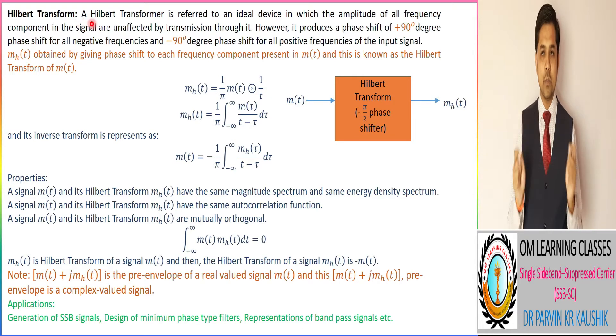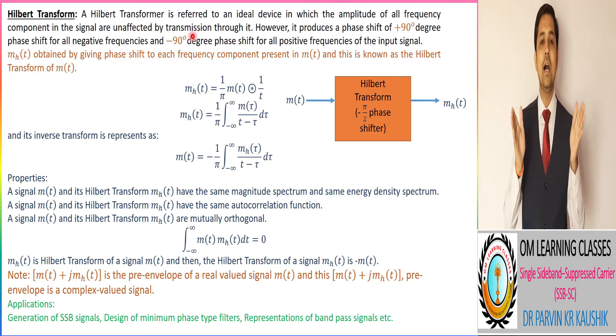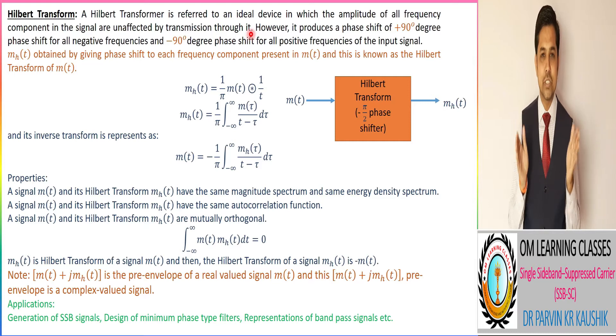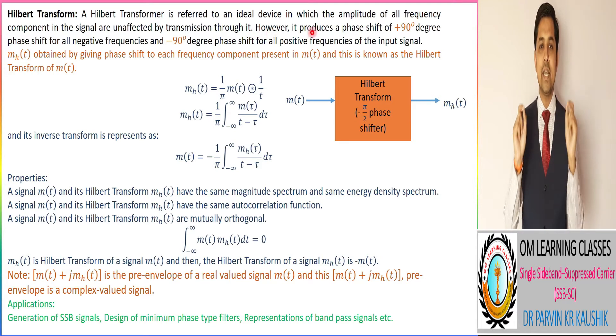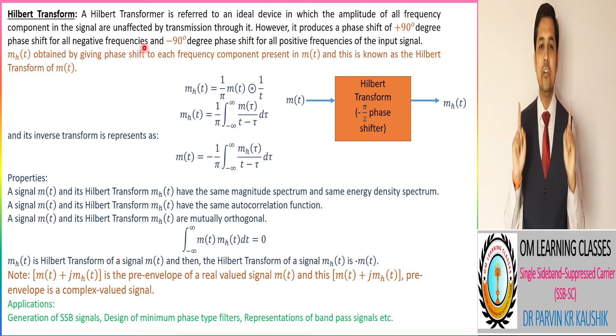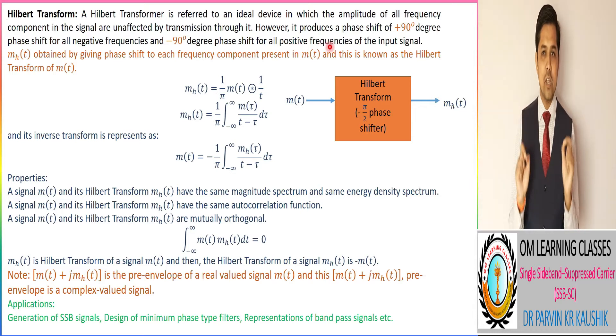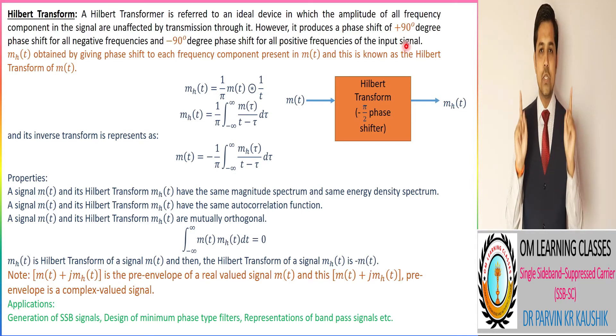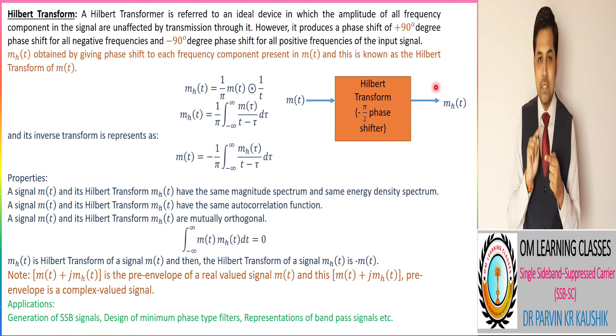A Hilbert transformer is referred to as an ideal device in which the amplitude of all frequency components in the signal are unacted or constant. This transformer produces a phase shift of plus 90 degree phase shift for all negative frequencies and minus 90 degree phase shift for all positive frequencies in the input signal.